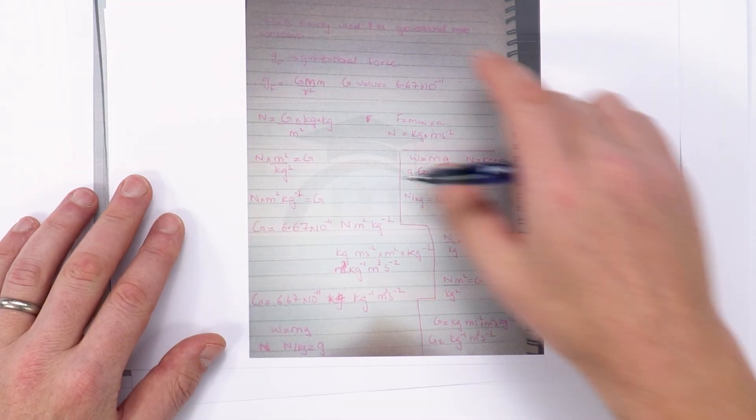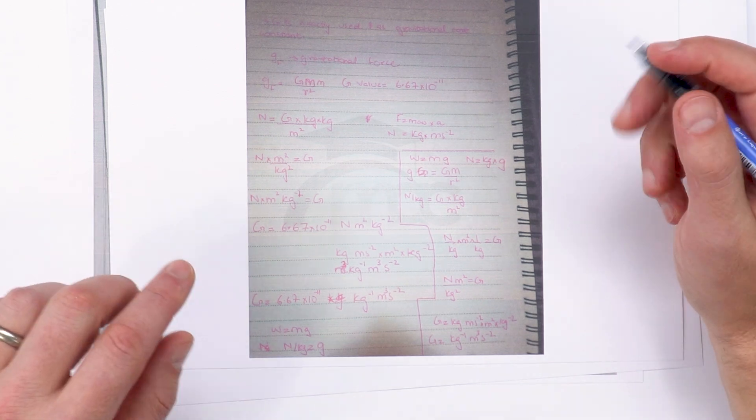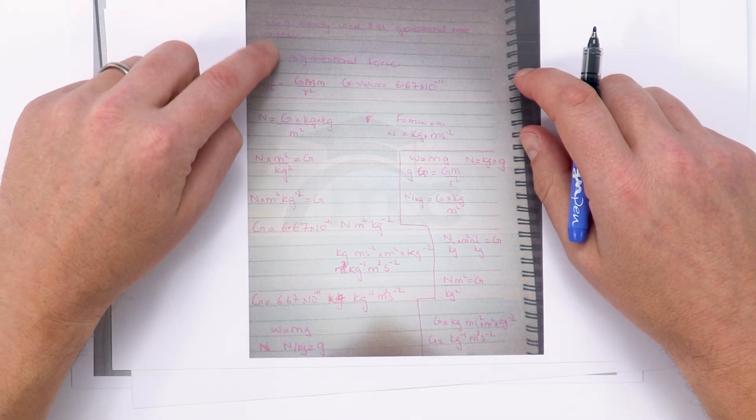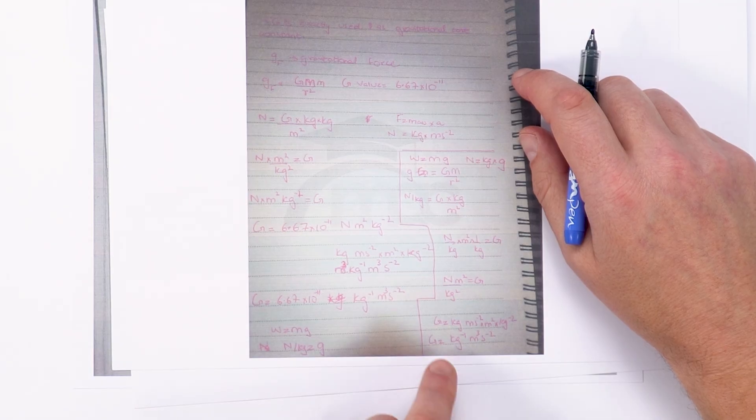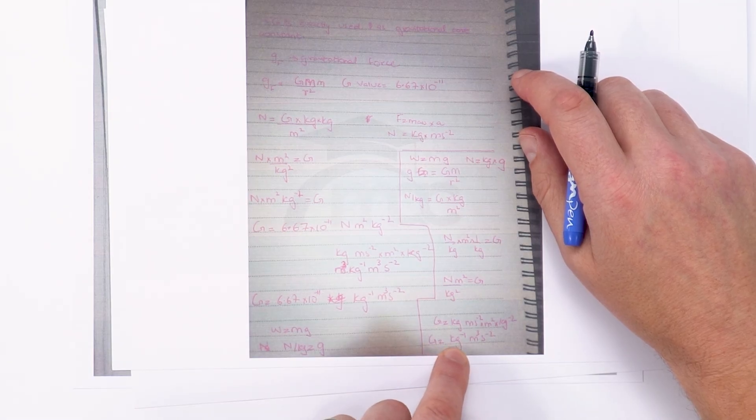This student here it's maybe a bit harder to see on the kind of printout but again they've gone through the process they've kind of written out clearly how they're doing things, and it's again quite nice to see at the end the value of g is equal to kilogram to the minus 1 metres cubed second to the minus 2.